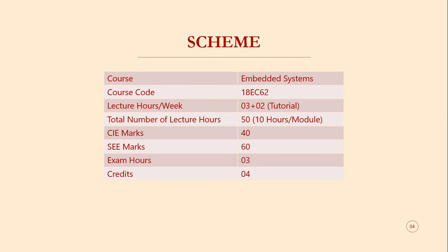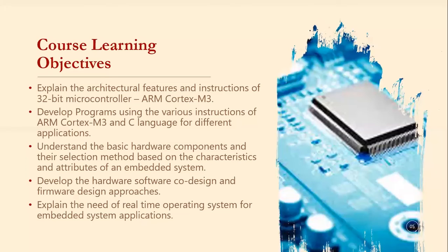Let us have a look at the course scheme. The subject is Embedded Systems, with course code 18EC62. There are three lecture hours per week plus two tutorial classes, totaling 50 lecture hours across five modules — 10 hours per module. The CIE marks is 40 and the SEE marks is 60, with the exam conducted for 100 marks reduced to 60. Exam duration is three hours and the subject carries four credits.